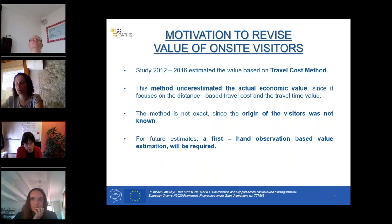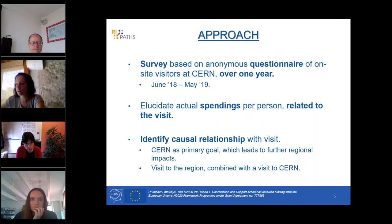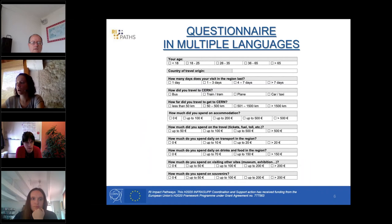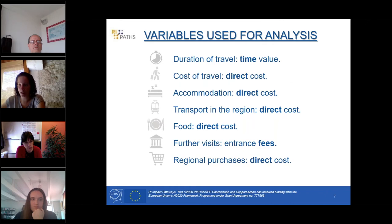The motivation to revisit the value of on-site visitors was a study carried out between 2012 and 2016 that estimated value based on the travel cost method. The problem was that this method is not exact since the origin of visitors is not known, and it underestimates the actual economic value since it focuses on distance-based travel cost and travel time value. This survey was carried out anonymously with visitors at CERN over one year — June 2018 to May 2019 — to obtain real visitor expenses and identify the causal relationship with the visit.